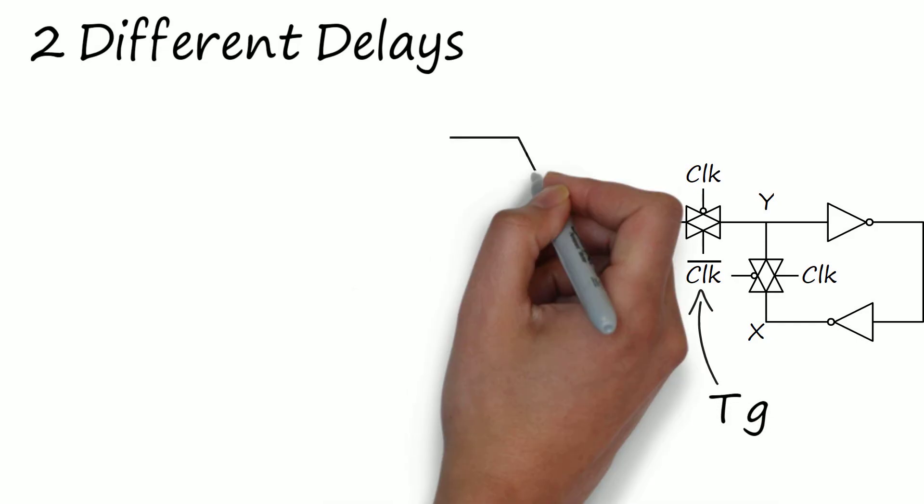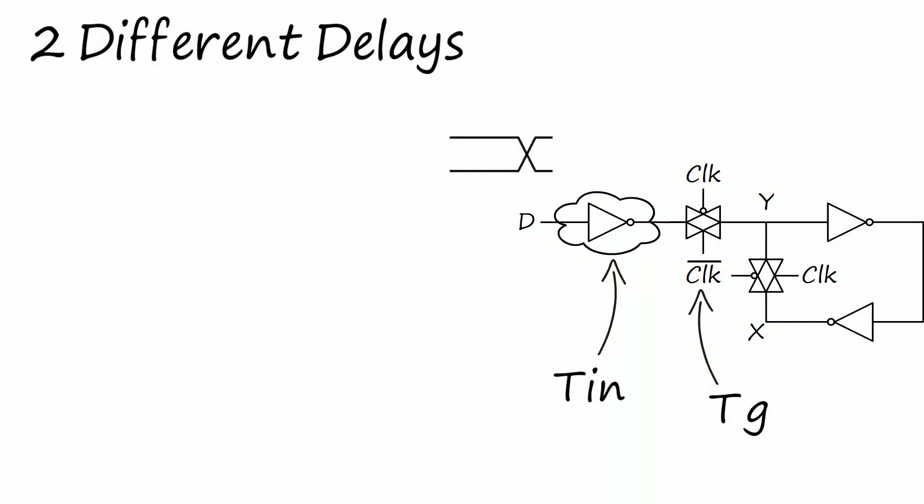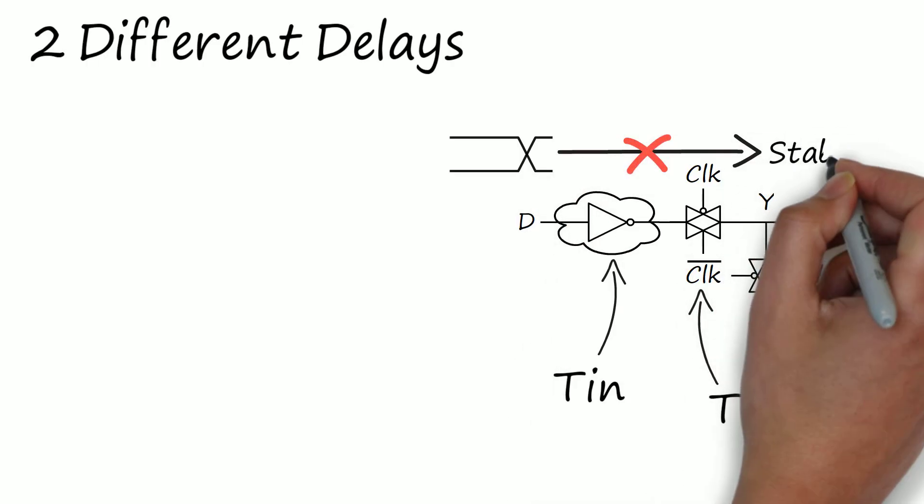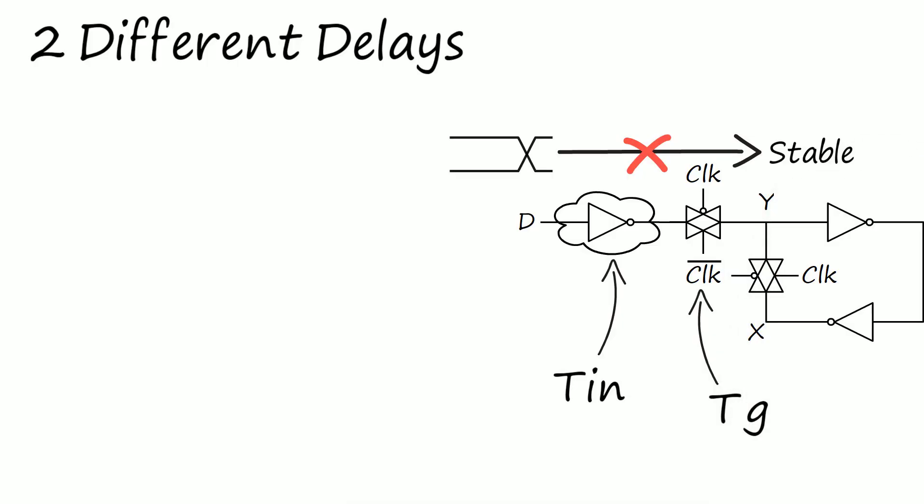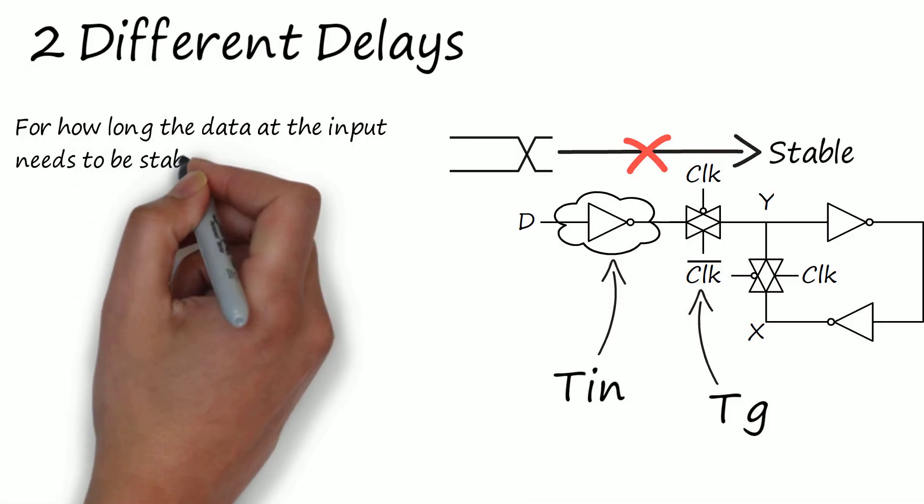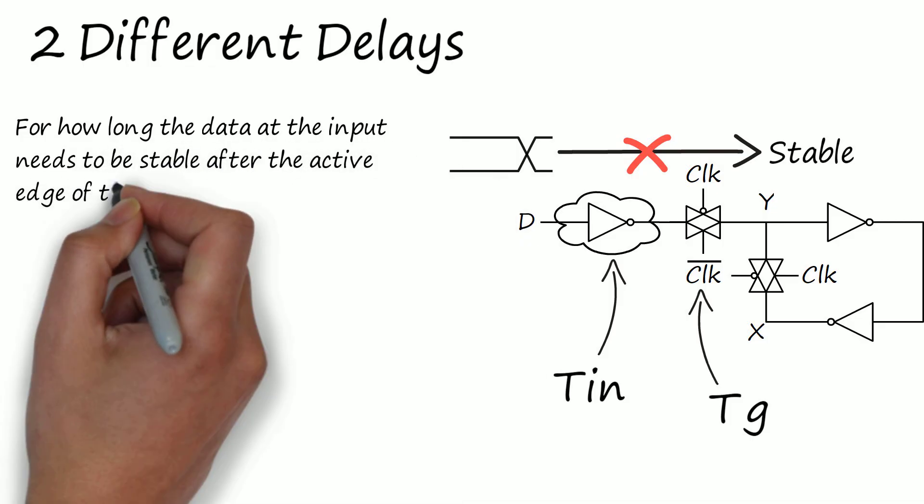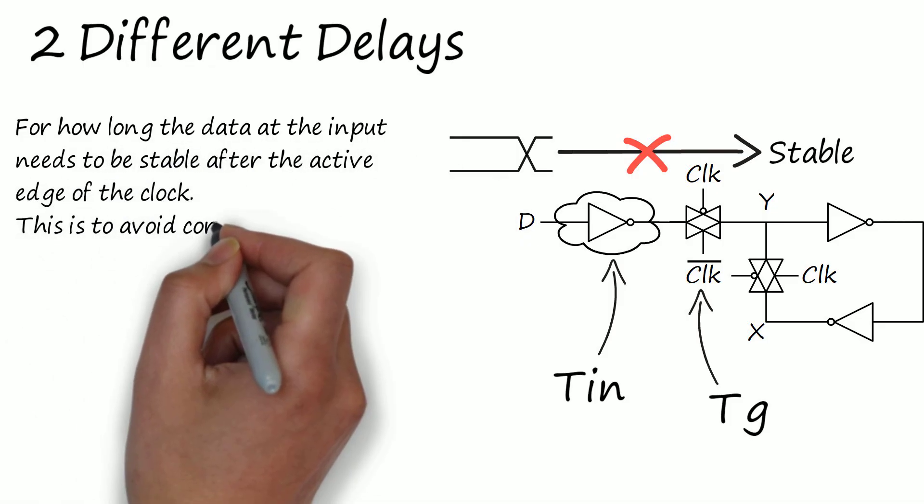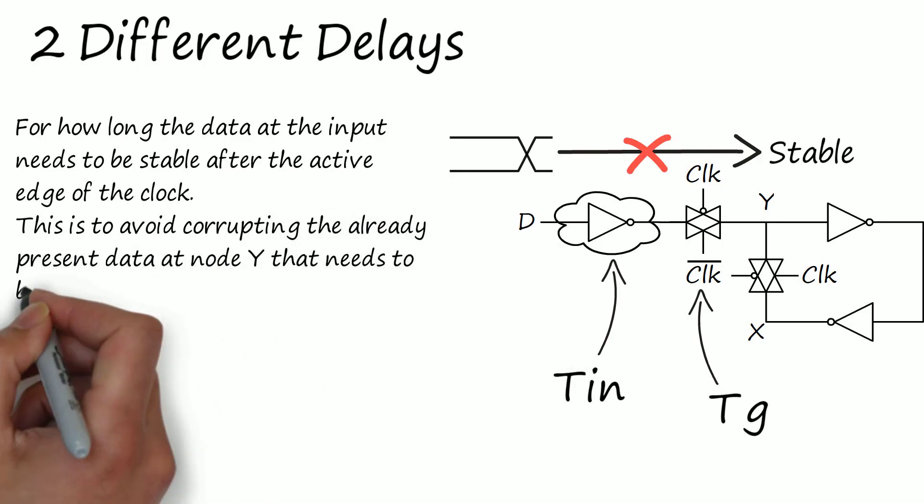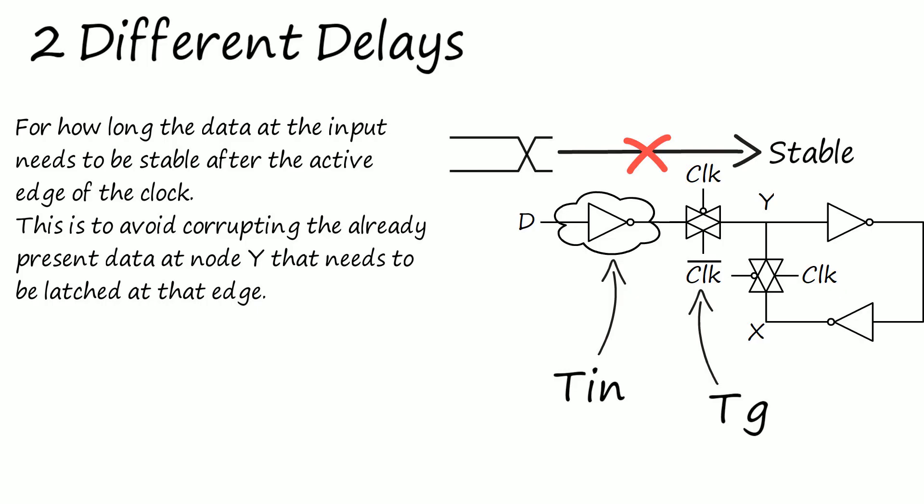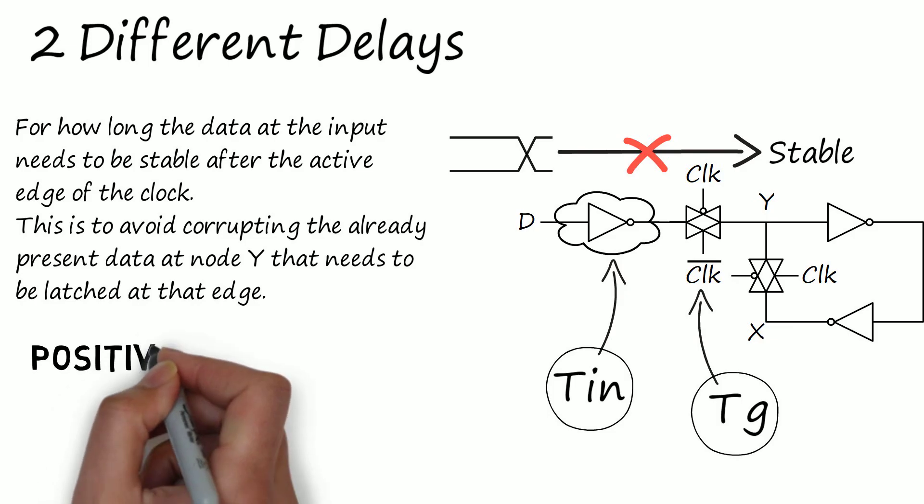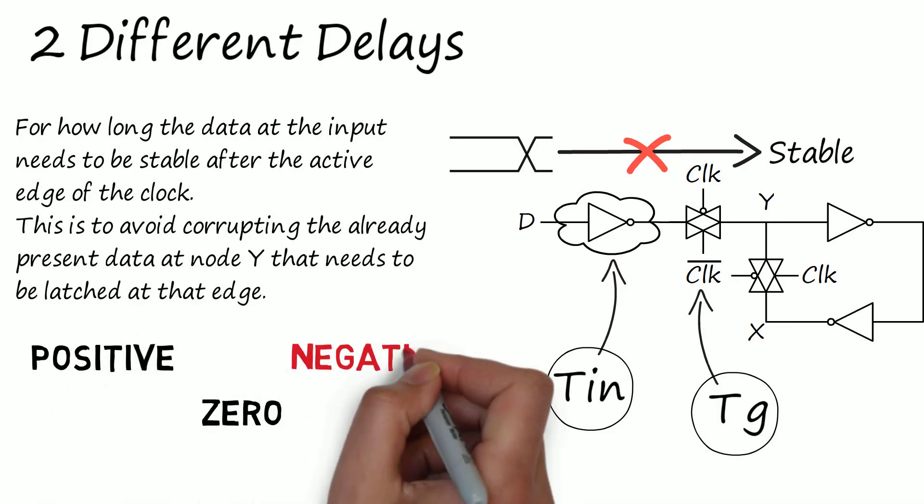Actually, our sole purpose is to prevent the data change that happens at the input from reaching the node Y while it needs to be stable for proper latching. In other words, for how long the data at the input needs to be stable after the active edge of the clock. This is to avoid corrupting the already present data at node Y that needs to be latched at that edge. So, the relative values of these two delays will decide whether the hold time is positive, zero or negative.